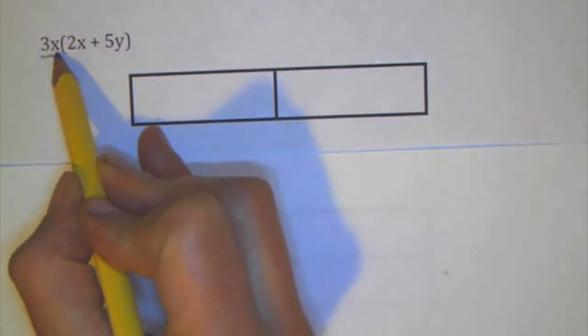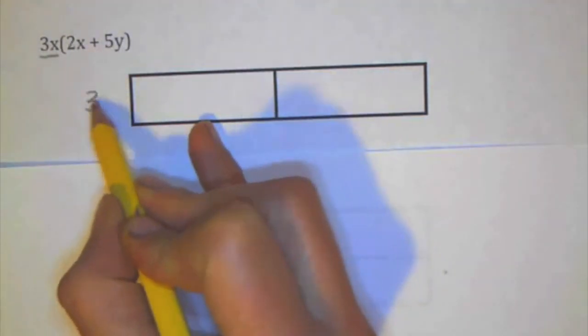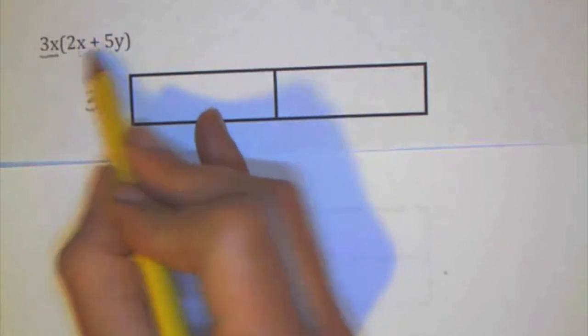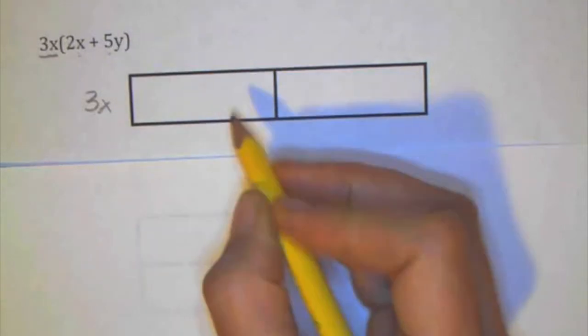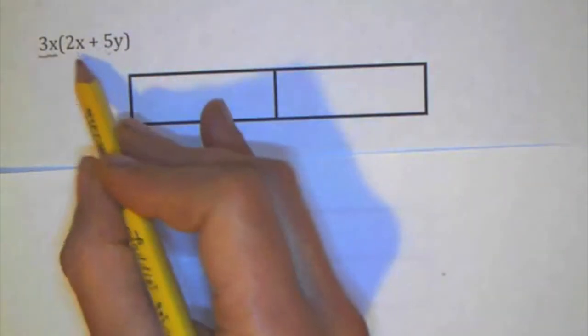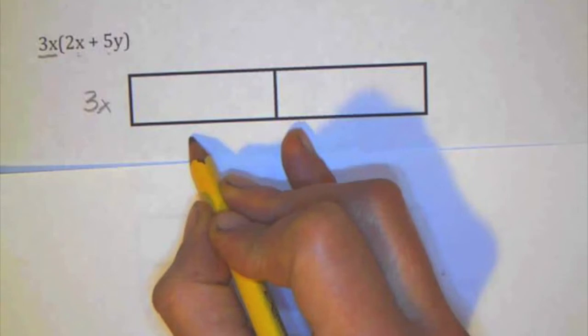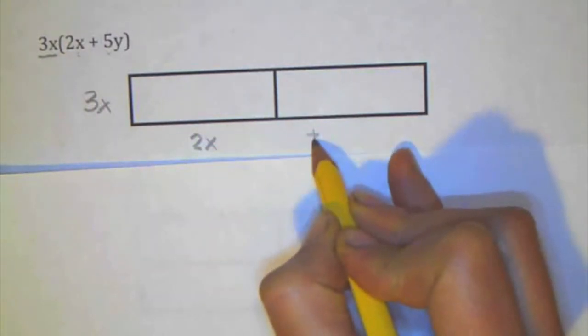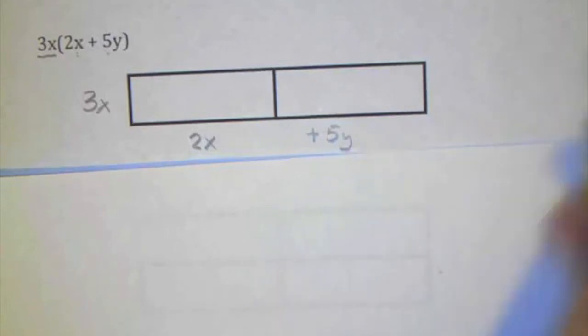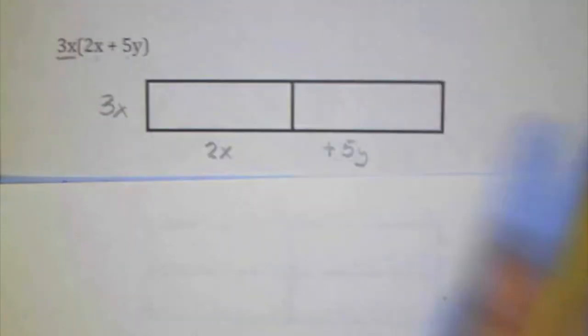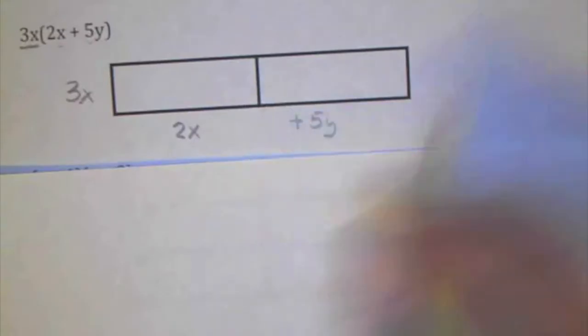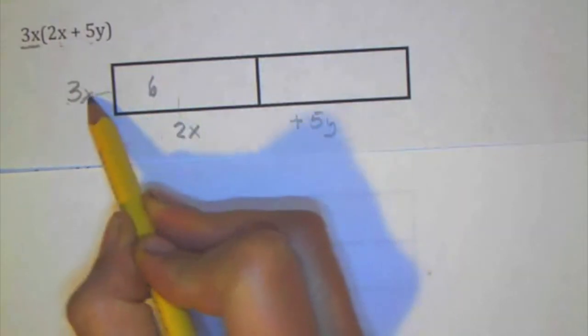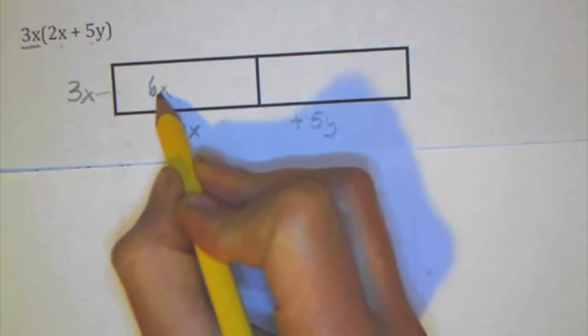So once again here's one term, so that gets one side. And then this group, each term inside of the group is going to get its own little box. So 2x and then over here plus 5y. And then we're going to multiply the 3x times the 2x. So 3 times 2 is 6, and x times x is x squared.